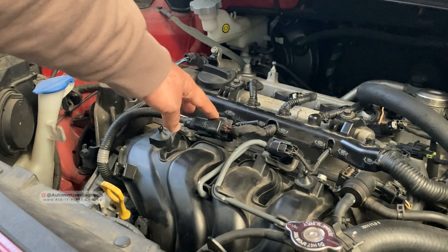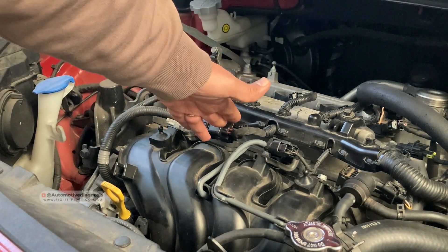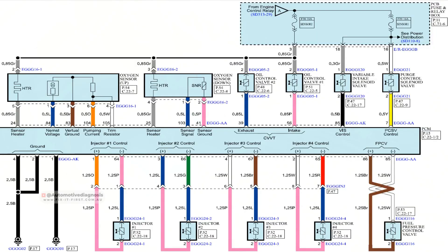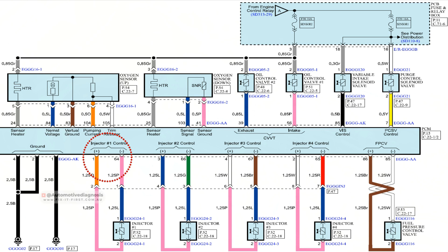This connector sits between the injectors and the engine control module, so you can reach the injector wiring from here. Looking at the wiring diagram: on port injectors you have two wires — one goes to the fuse box for positive voltage and the other is the negative control line to ECM. On GDI injectors, both wires are connected to the ECM. The ECM controls the injectors through both wires — we call these the high side and the low side.